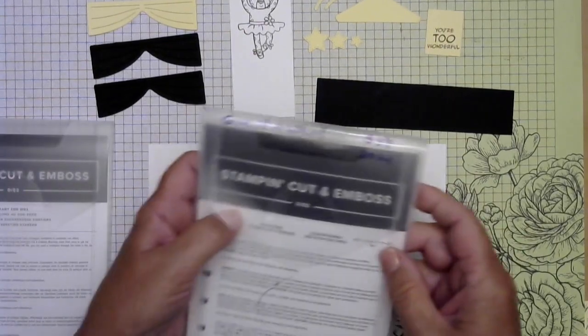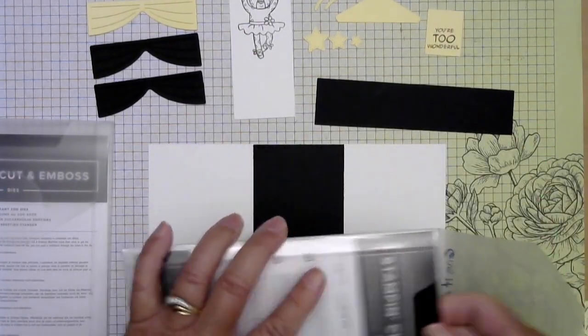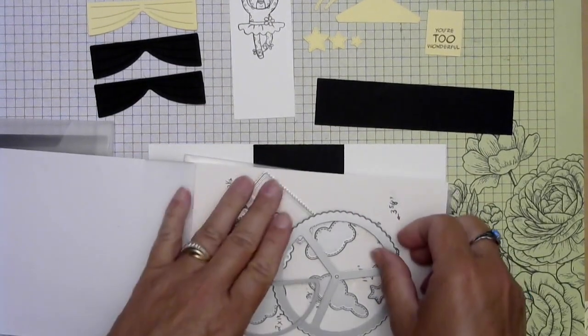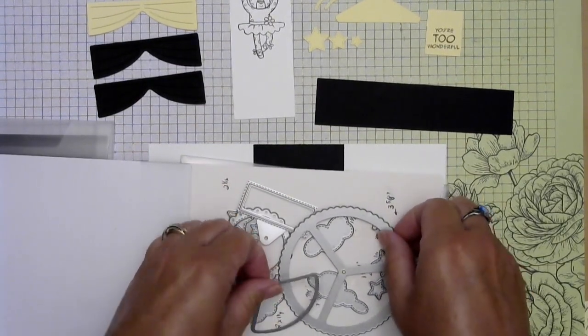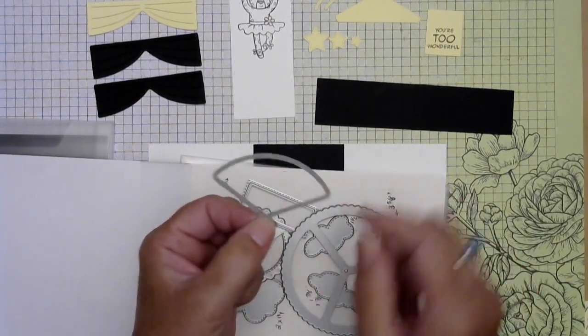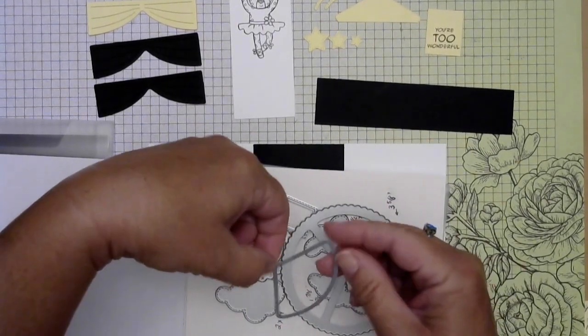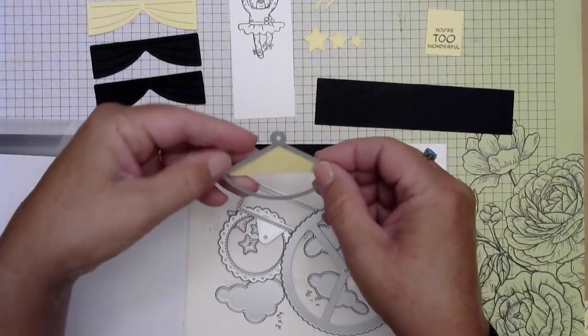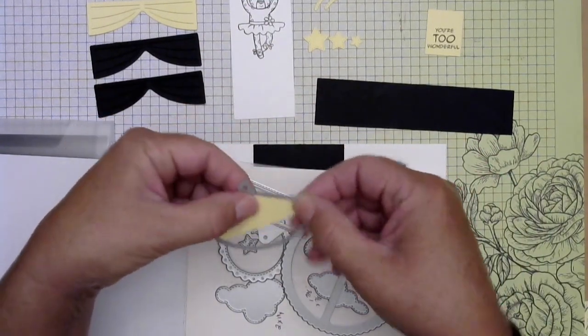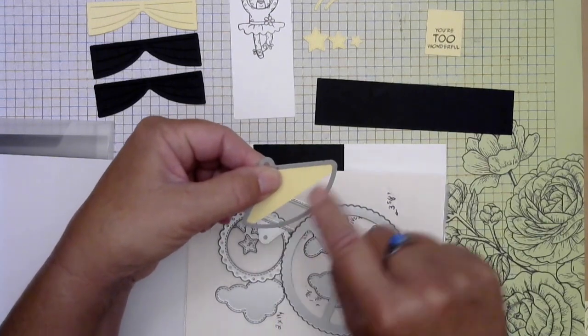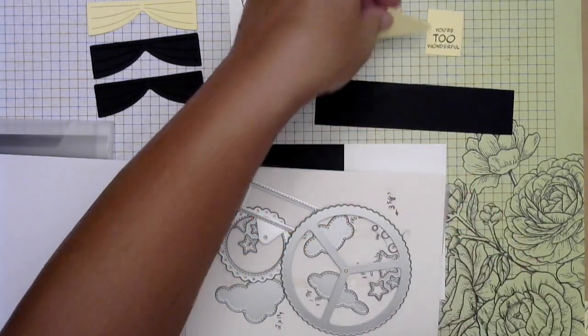But let's talk about what we're going to use for the give it a whirl. We're actually using this, this is our spotlight. And then after I cut it out I just snipped a piece off the bottom.